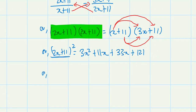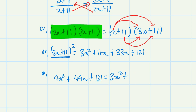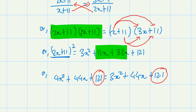Now expanding the left side: (2x)² = 4x², plus 2 times 2 times 11 = 44x, plus 11² = 121. So 4x² + 44x + 121 is equals to 3x² + 44x + 121.